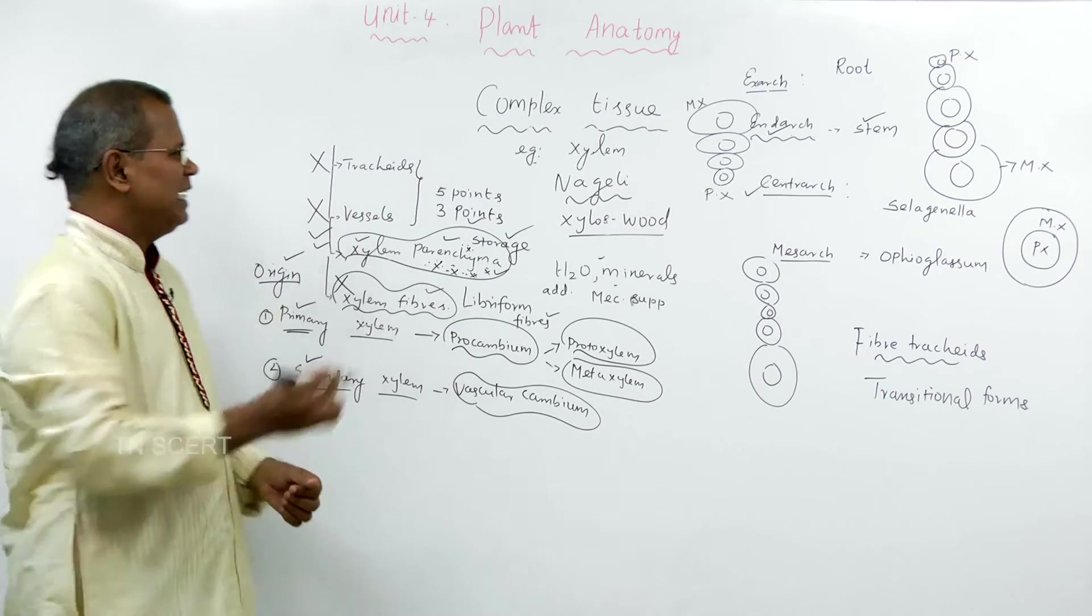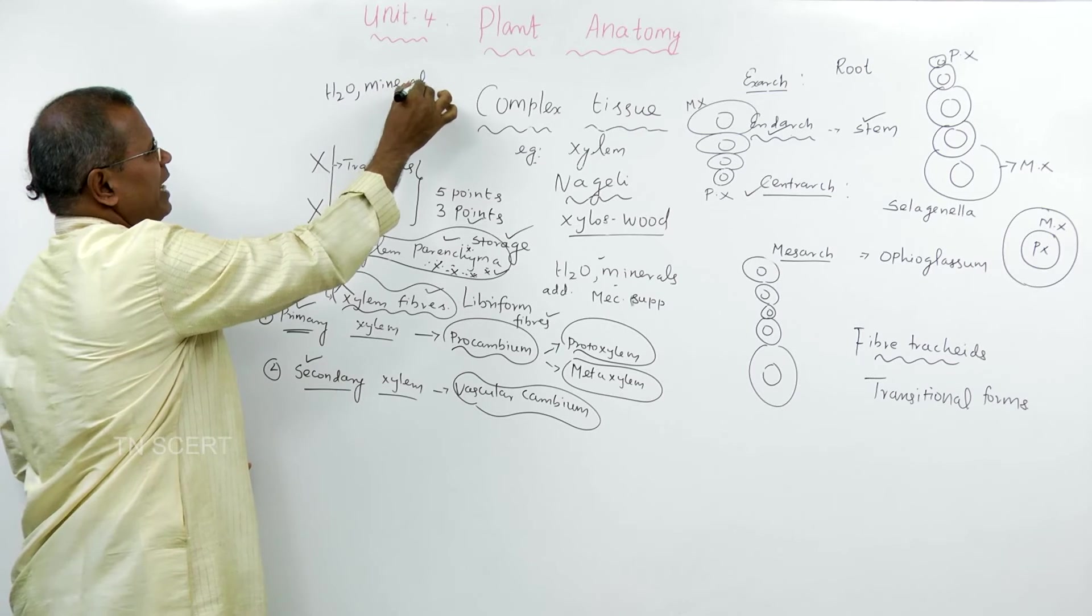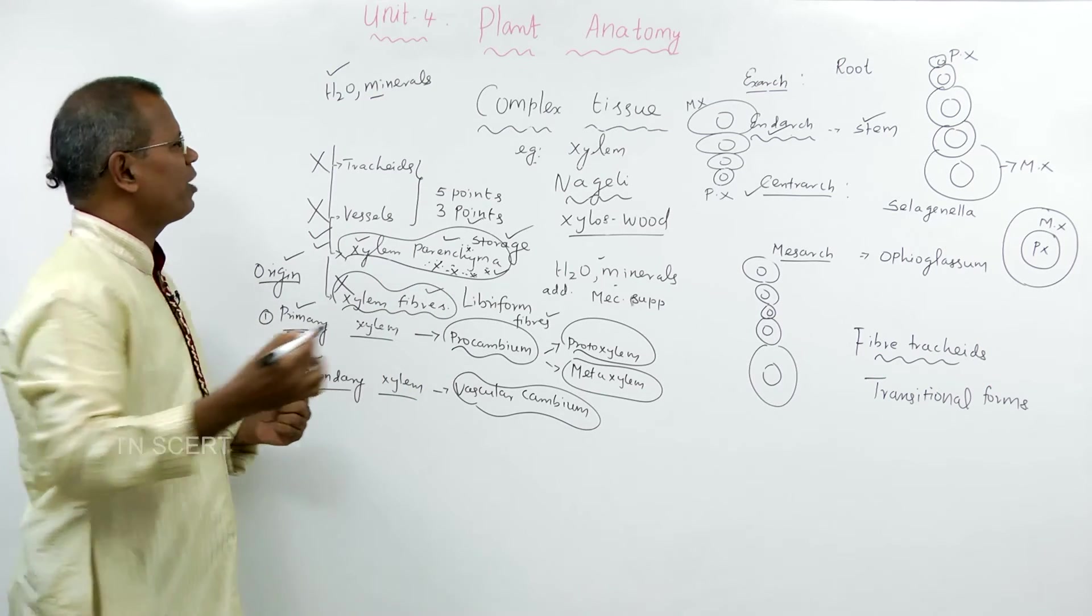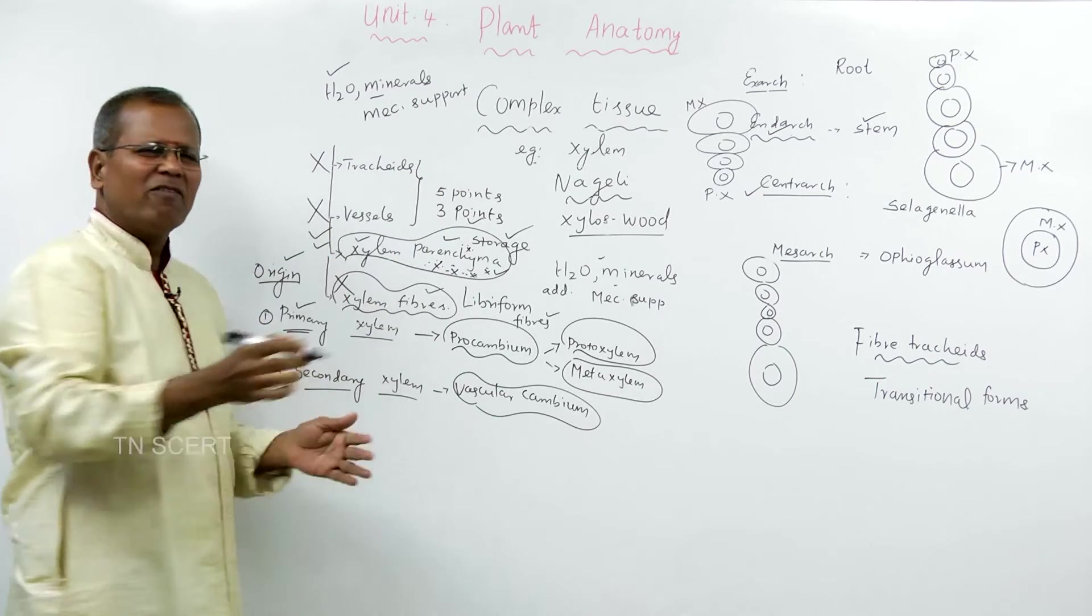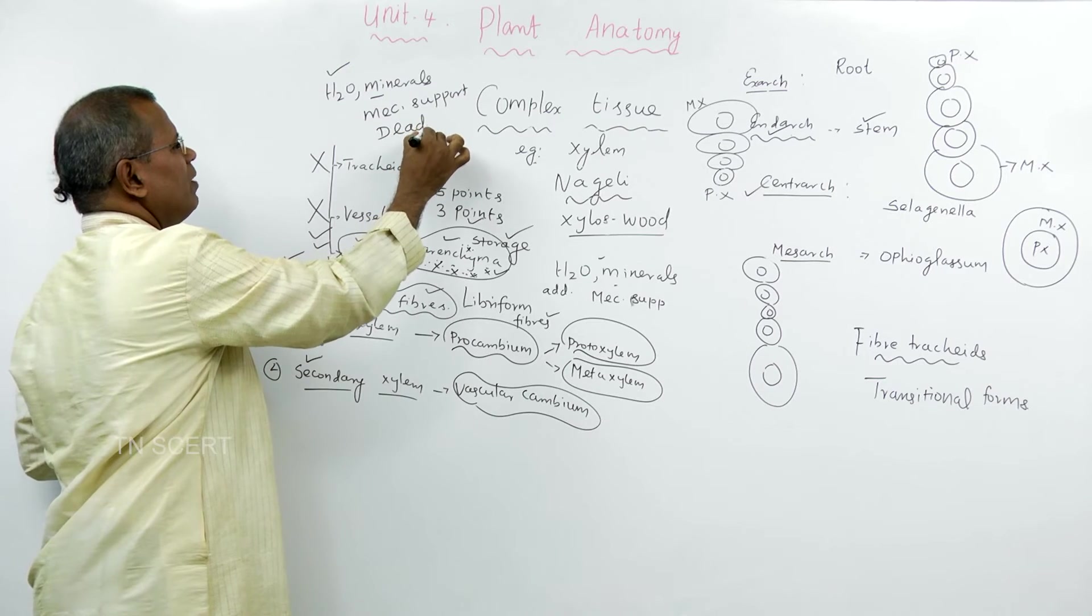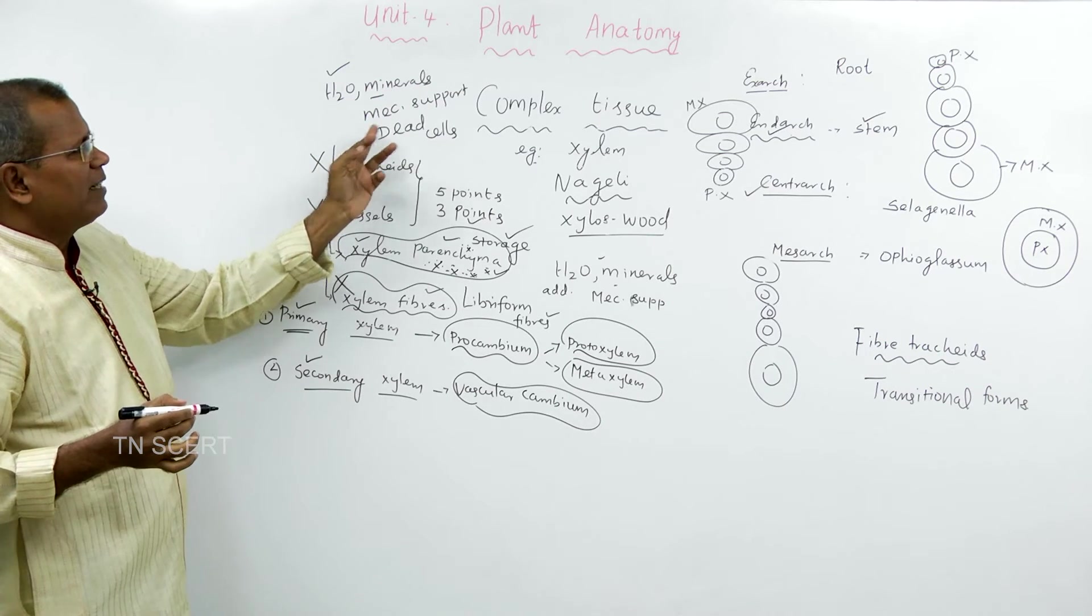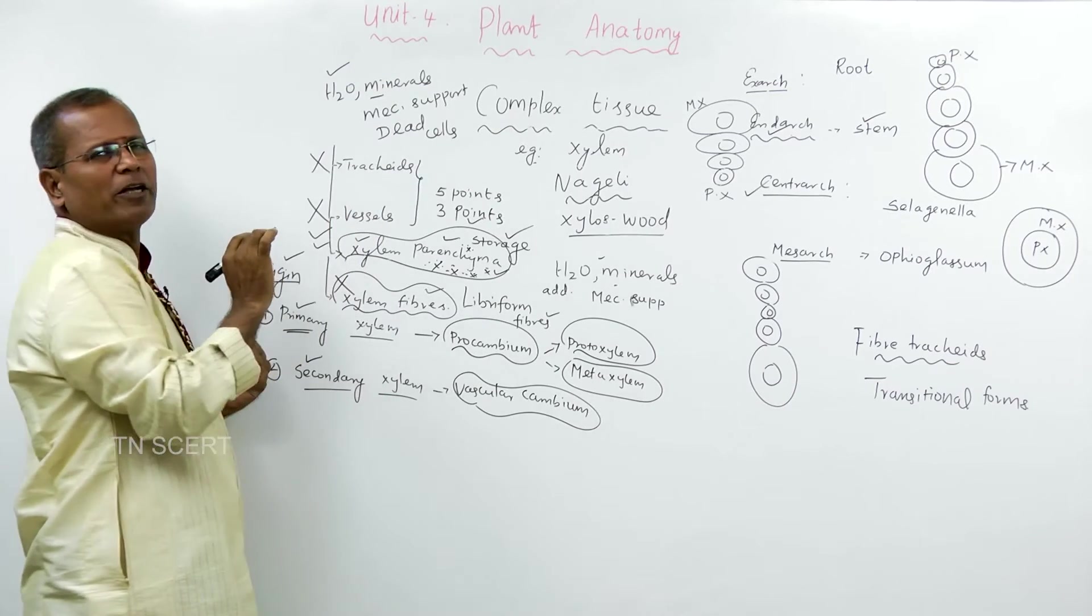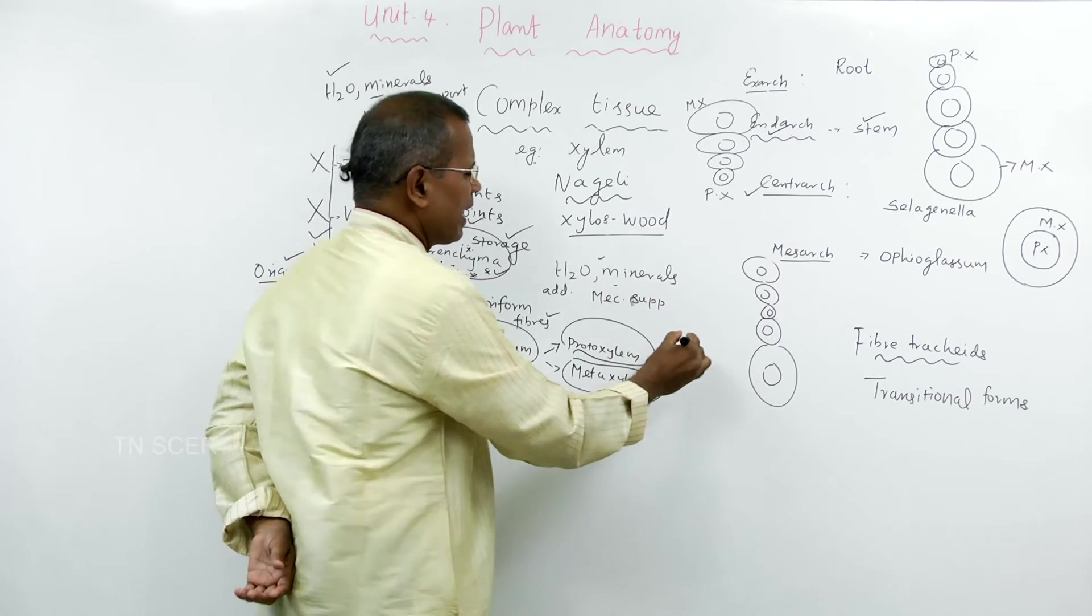Five points are common to tracheids and vessels. Tracheid as well as vessels conduct water and minerals. They also provide mechanical support to the plant body. Devoid of protoplast, hence dead cells. Both conduct water minerals, both are dead cells, both provide mechanical support.